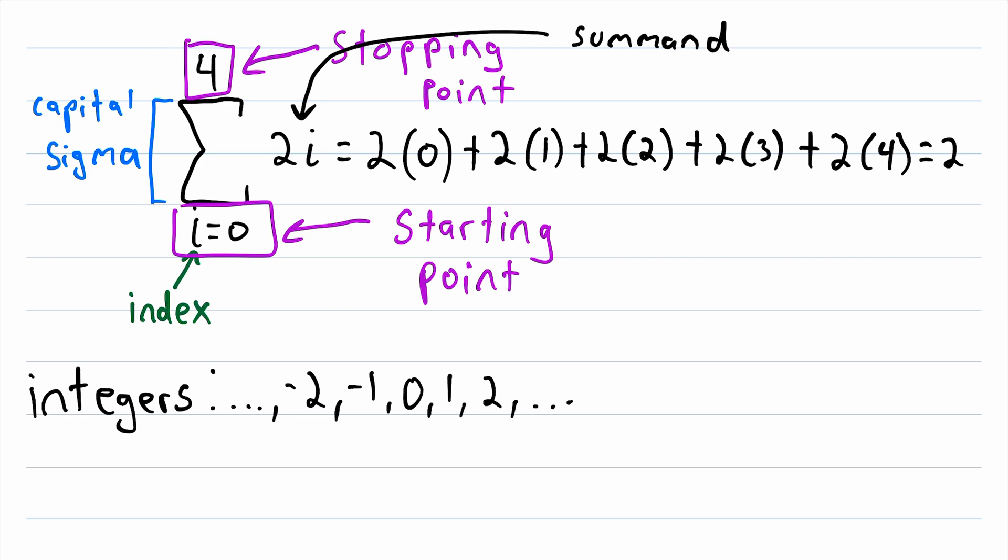And this happens to be equal to twenty. So, all we did was add the summand over and over again, starting at the starting point, i equals zero, and then in each term, we increment i up by one. So, we went from zero, to one, to two, to three, to four, and we stop at the stopping point, which was i equals four. It's pretty nifty, if I do say so myself.